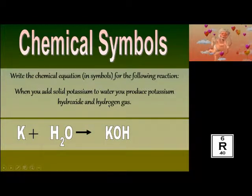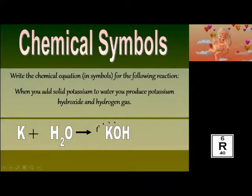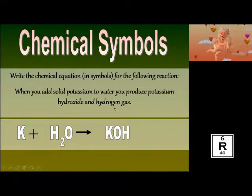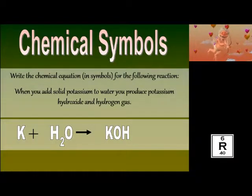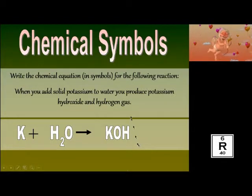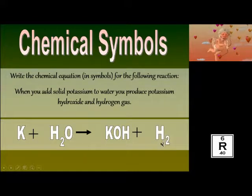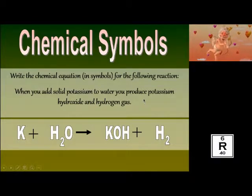This is where a lot of people make a mistake. I'm impressed at how many people get potassium hydroxide correct, but you have to remember there are seven diatomic elements — that means they exist in pairs. Hydrogen is one of those diatomics, so don't forget to write H₂. Okay, now that's our equation.